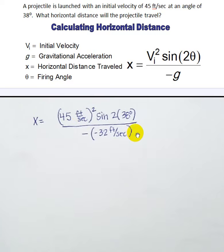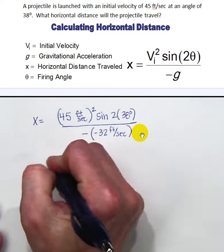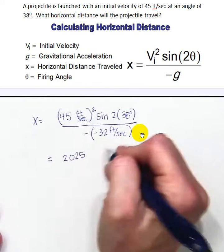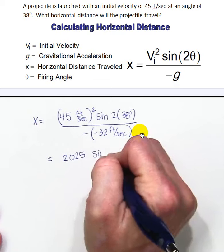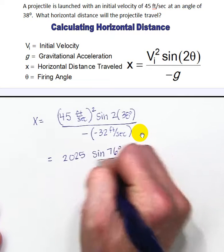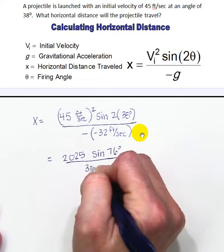When I simplify this, 45 squared is 2025, and then I'm going to do times the sine of 76, because that's twice 38 degrees, and I'm going to divide by 32.